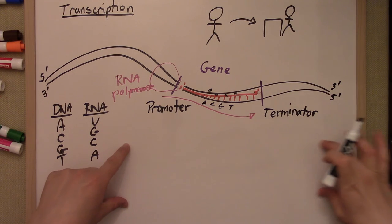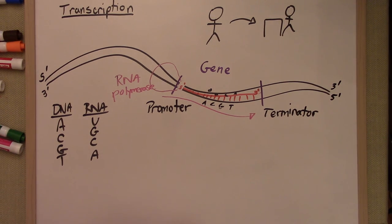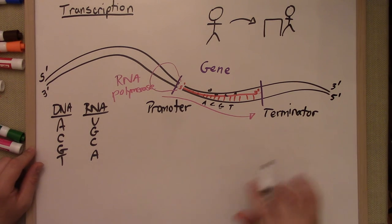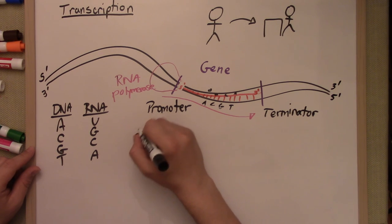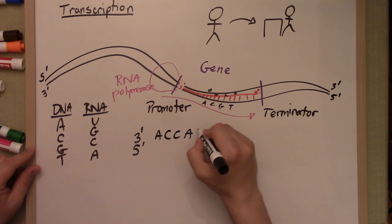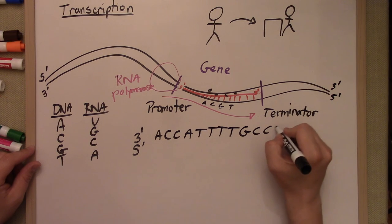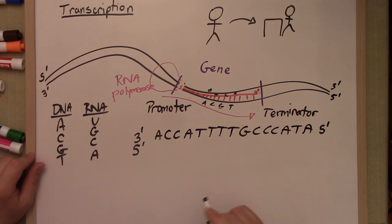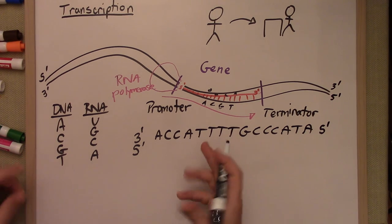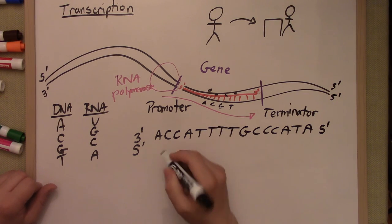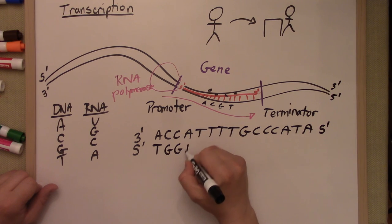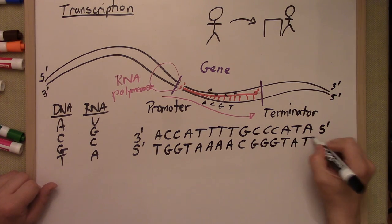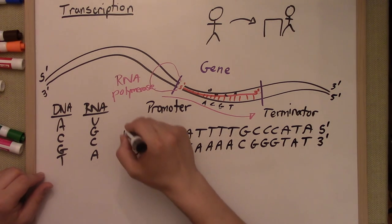I'm going to write out a double-stranded chain here randomly, just off the top of my head. What I want you to do is pause the video and tell me what RNA chain is going to be made from that piece of DNA. So here's my 3 prime / 5 prime strand: A, C, C, A, T, T, T, T, G, C, C, C, A, T, A. I'm going to write in the complementary bases for the DNA. You can take a minute to try it yourself. If I make any mistakes — which happens all the time — you can leave me a message and let me know. So this is our piece of double-stranded DNA.